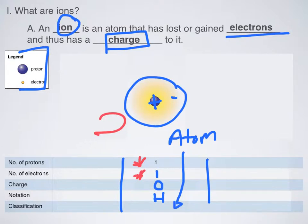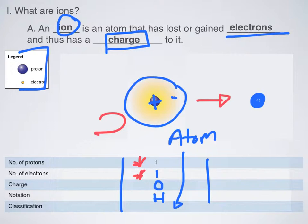What would happen if I were to gain or lose electrons? Because that's what an ion is. Over here in the corner, I'm going to draw a representation of what this would look like as an ion. I'm going to keep the same number of protons — there's some empty space there for you to draw a picture of what an ion would look like. So I'm going to draw one proton and no electrons this time. It's just a proton.